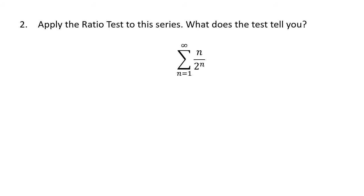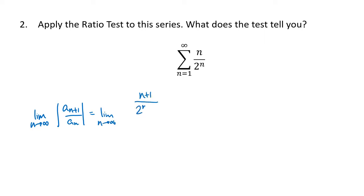What about this next example? We have n divided by 2 to the n, and again we're told to apply the ratio test. So we look at a_{n+1} divided by a_n — no negatives in this series, so we can drop the absolute value. When we set up our fraction, we get n+1 over 2 to the (n+1) divided by n over 2 to the n.